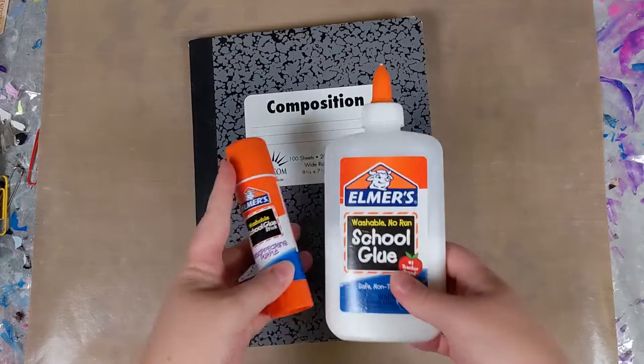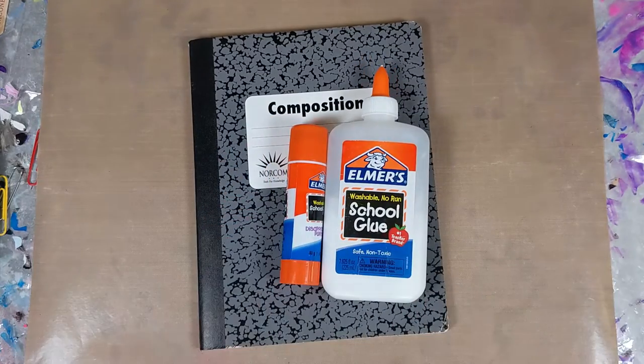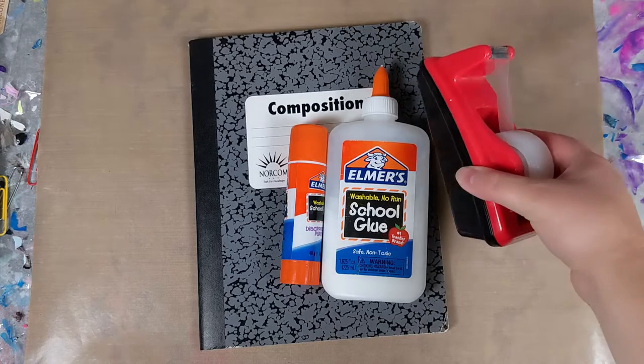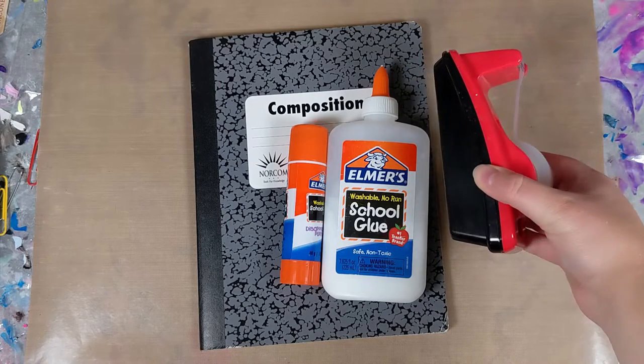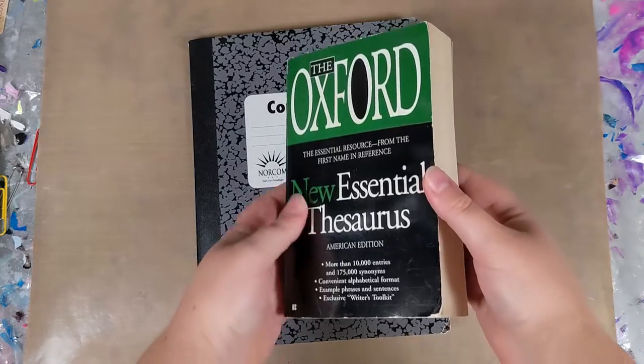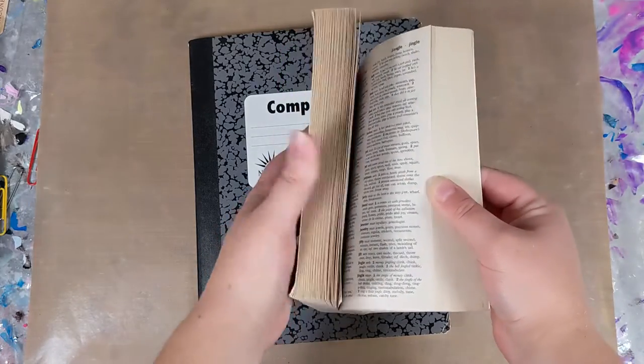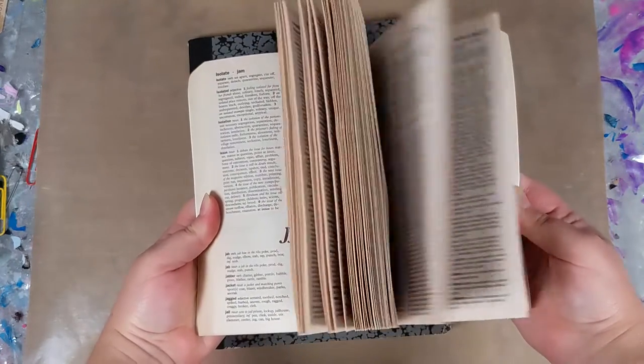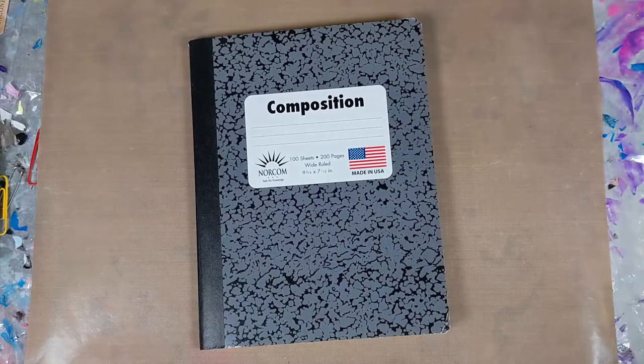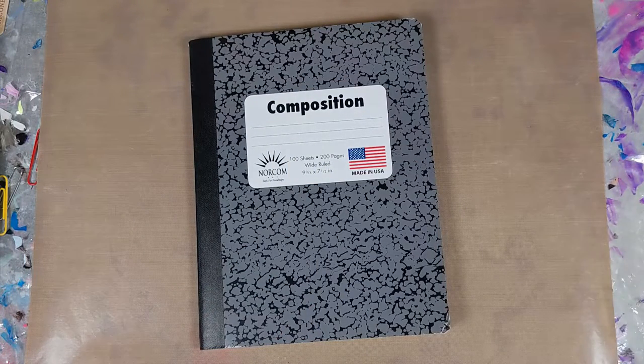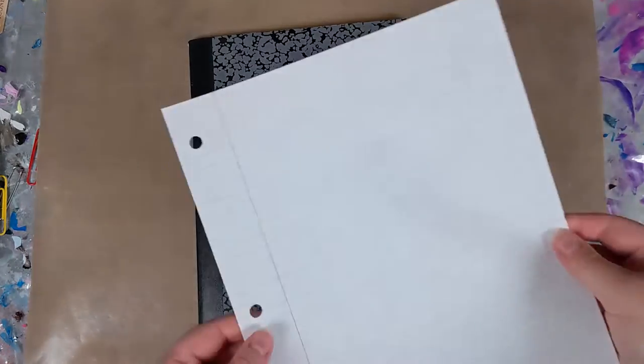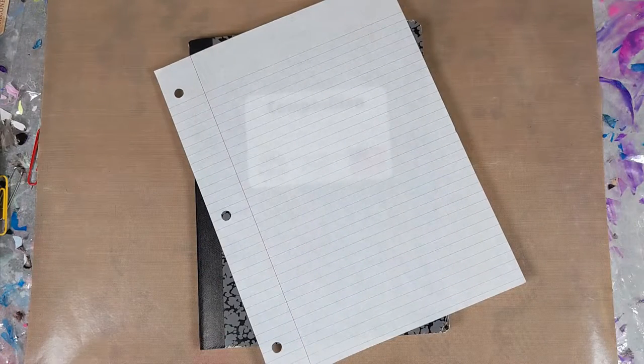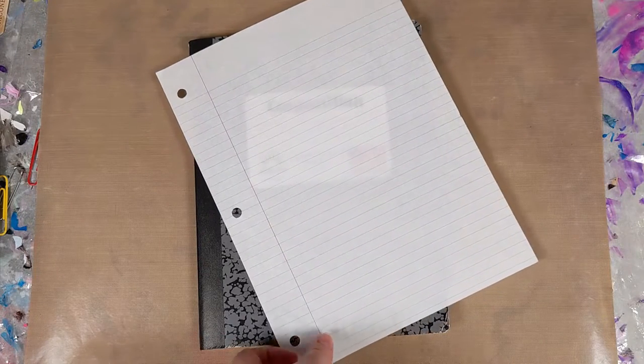What you need for this project includes the following. Glue or some sort of other way to attach pieces of paper to your page including tape or anything else. Some sort of book that you can cut a section out of, I am using a thesaurus. If you don't have a thesaurus or a dictionary or something to cut things out of, you can just use a piece of paper and write a quote or something out of a thesaurus on it. We'll go into that a little bit more later.